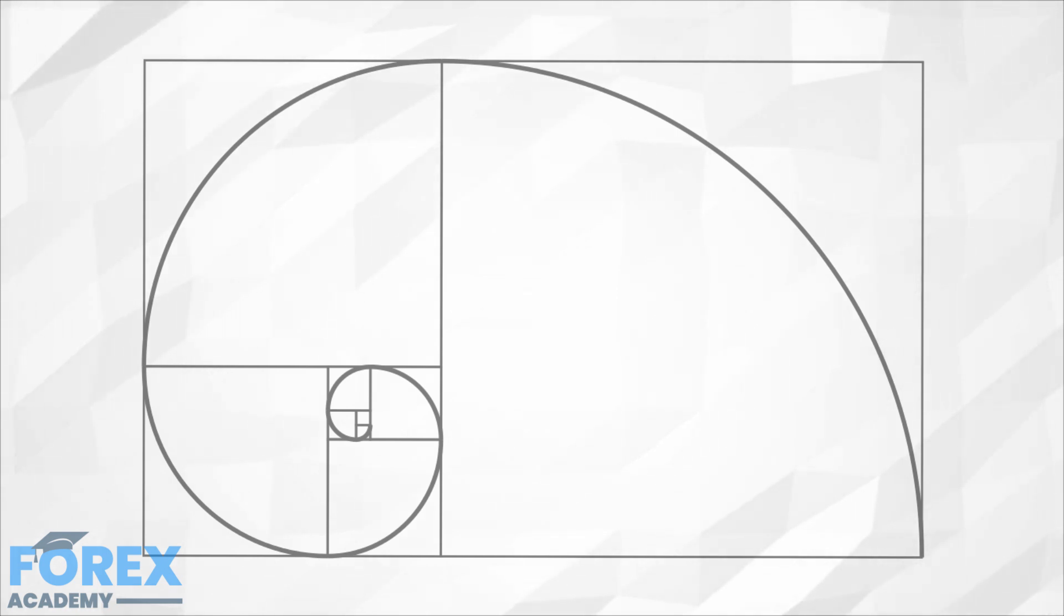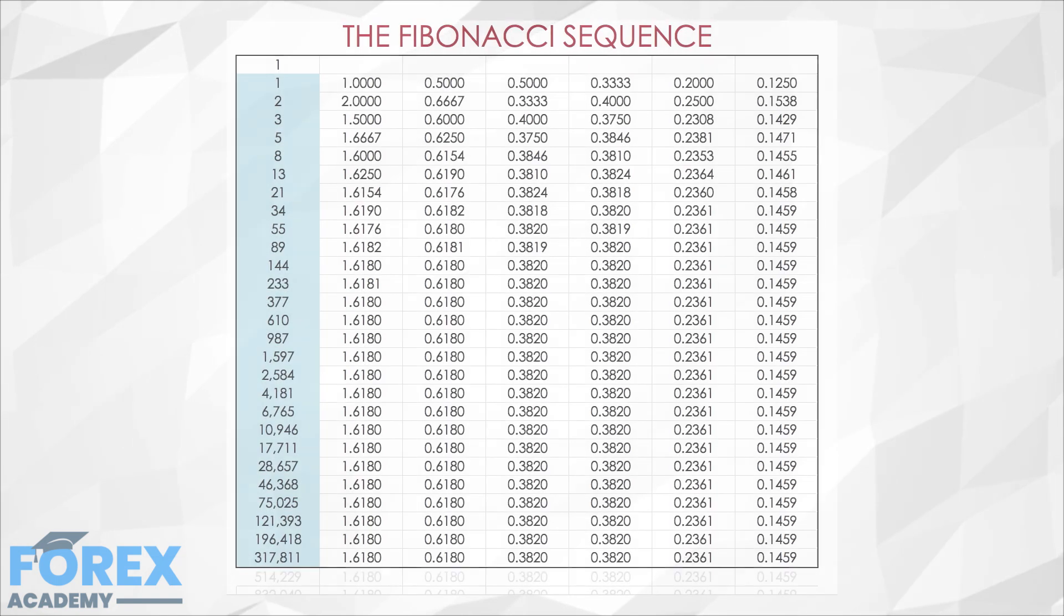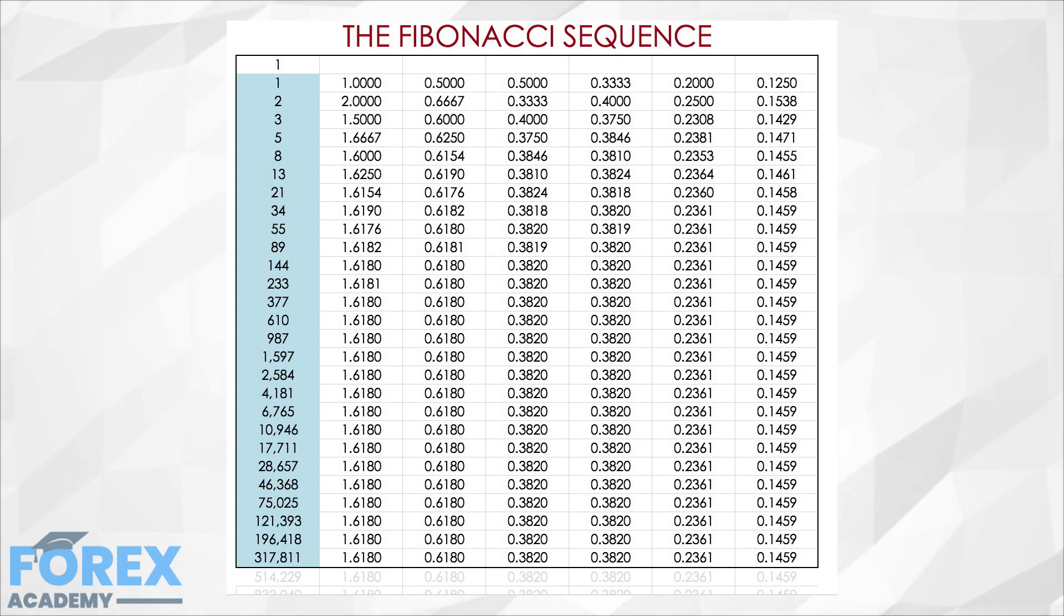As you may know, the Fibonacci number sequence begins with one and one, and then every following number is made from the previously added two. As the number grows, a Fibonacci number divided by its previous number in the series gives the golden ratio 1.61180. The reciprocal, a Fibonacci number divided by the next number, provides the golden ratio 0.16180. 0.382 comes from the ratio of a Fibonacci number and the second next.